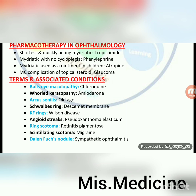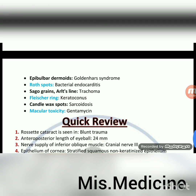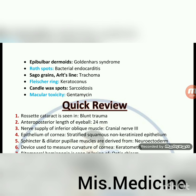Terms and associated conditions: Bull's eye maculopathy — chloroquine. Holt keratopathy — amiodarone. Arcus senilis — old age. Squalus ring — Descemet's membrane. KF ring — Wilson's disease. Angioid streaks — pseudoxanthoma elasticum. Ring scotoma — retinitis pigmentosa. Scintillating scotoma — migraine. Dalen-Fuchs nodule — sympathetic ophthalmitis. Epidermoid dermoids — Goldenhar syndrome. Roth spots — bacterial endocarditis. Sago grains and Arlt's lines — trachoma. Fleischer rings — keratoconus. Candle wax spots — sarcoidosis. Macular toxicity — gentamicin.